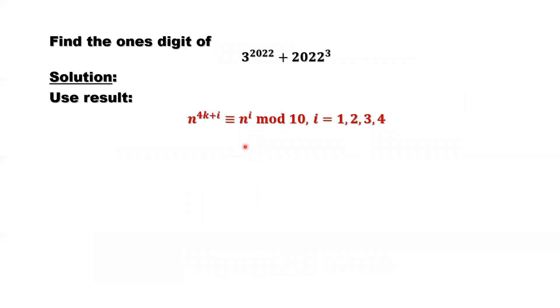Back to the question. We can use this result. If we have this result, this problem will be very easy to solve. Look at the power, 3 to the power of 2022. 2022, we can rewrite into this kind of format: 4k plus i, that's 4 times k plus i. k is 505, i is 2.